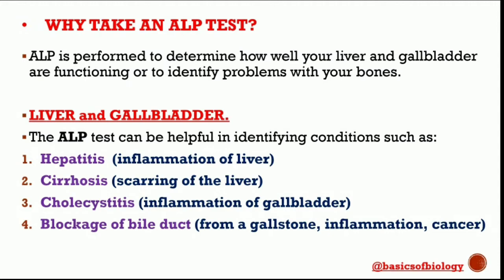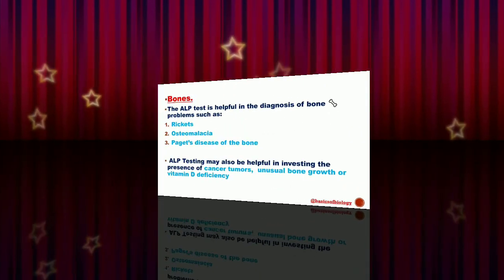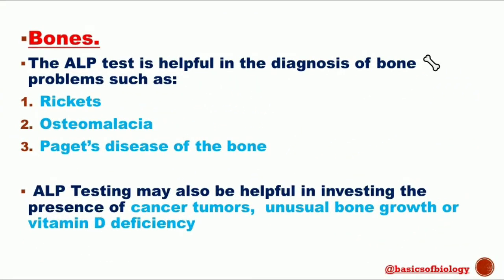Medications such as Tylenol can damage the liver, and measuring alkaline phosphatase is one way to check for that damage. This is typically done together with other liver function tests. The alkaline phosphatase test can also be helpful in the diagnosis of bone problems such as rickets, osteomalacia, and Paget's disease of the bone.